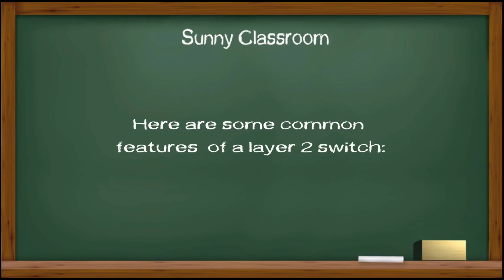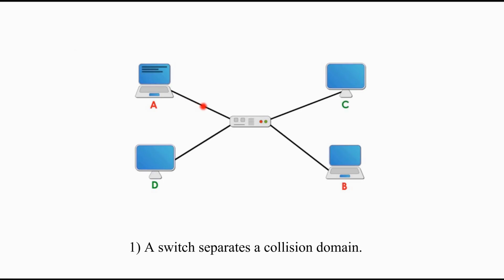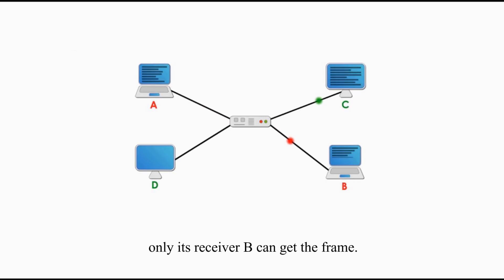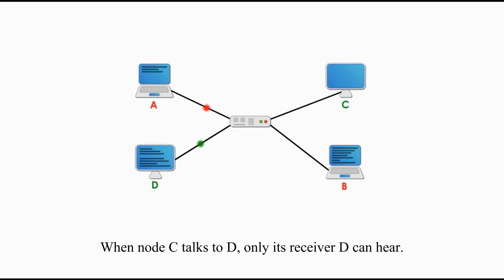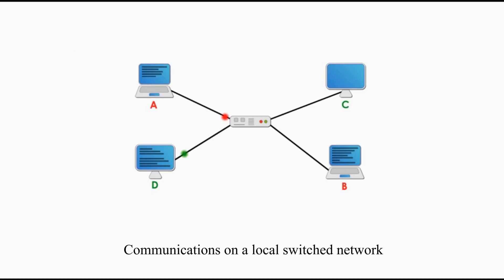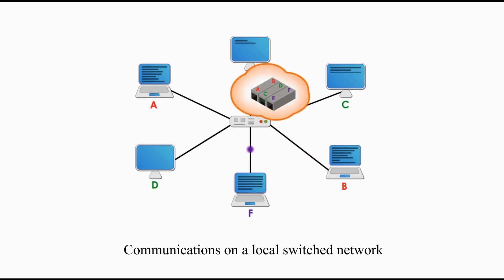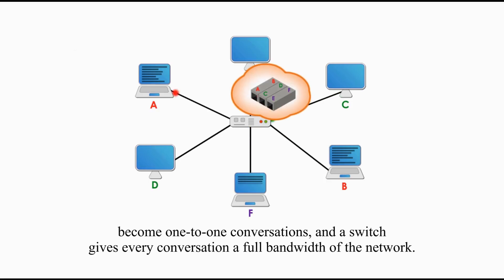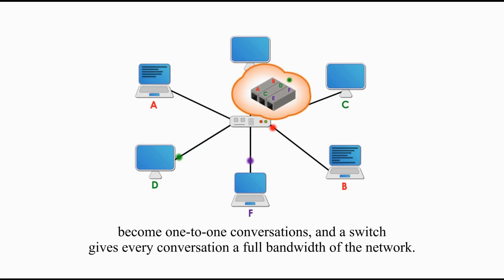Here are some common features of layer 2 switch. First, a switch separates a collision domain. When node A sends a frame to B, only its receiver B can get the frame. When node C talks to D, only its receiver D can hear. Communications on a local switched network become one-to-one conversations, and a switch gives every conversation a full bandwidth of the network.